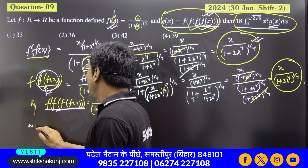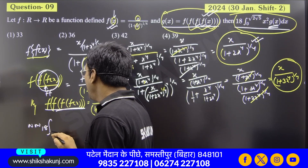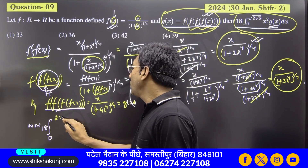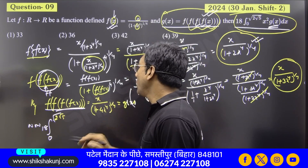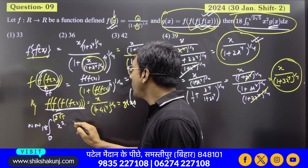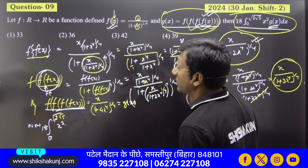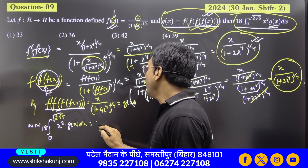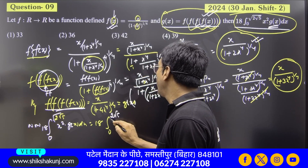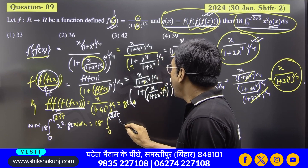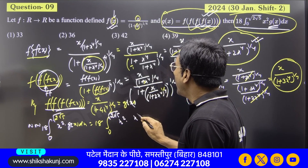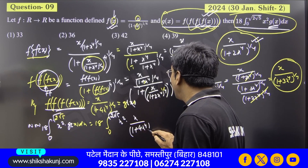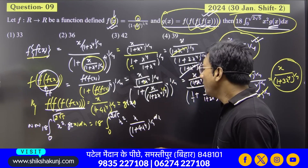What is to be done: 18 times integration, lower limit 0, upper limit 2√(√5) — that is √(2√5) — of x squared times g(x) dx. So: 18 times ∫₀^(√(2√5)) of x² times [x/(1 + 4x⁴)^(1/4)] dx.